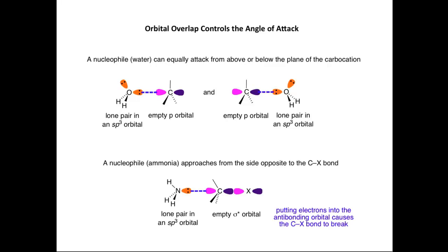If we now consider how ammonia reacts with a C-X bond in a haloalkane, we can explain the angle of attack through orbital overlap. The lone pair in the sp3 orbital on ammonia interacts with the empty sigma-star orbital of the C-X bond. To maximize orbital overlap, the angle of attack of ammonia on the C-X bond is 180 degrees. By putting electrons into the antibonding orbital, we cause the C-X bond to break — so a new N-C bond forms at the same time as the C-X bond breaks.